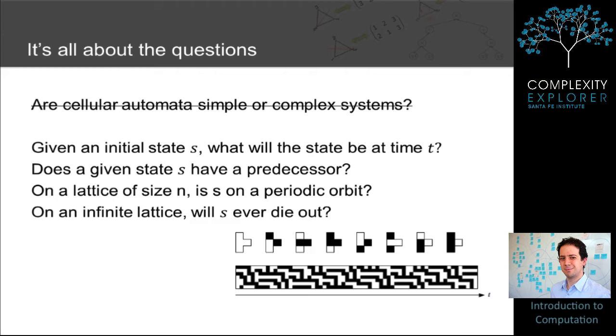It turns out that each of these questions has vastly different complexity. The first one can be solved in polynomial time because you simply take the state s and evolve it forward for t time steps. The second one is in NP, because if I show you the predecessor state, it's easy to check that s, in fact, follows from its predecessor. And it turns out that this problem is NP-complete, so it's as hard as any problem in NP.